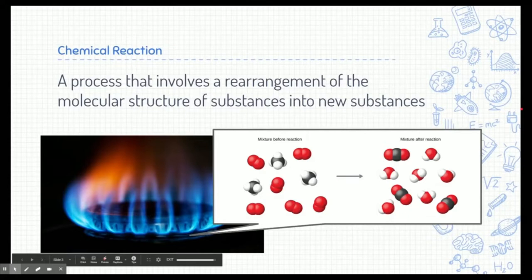Let's start with the definition of a chemical reaction. A chemical reaction is a process that involves the rearrangement of the molecular structure of substances into new substances.